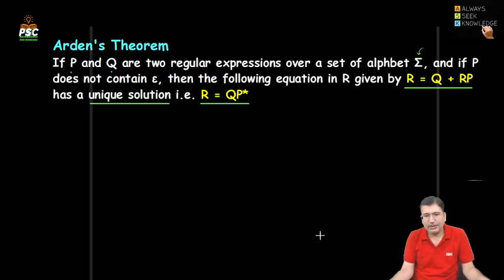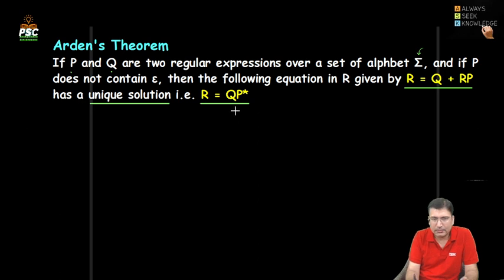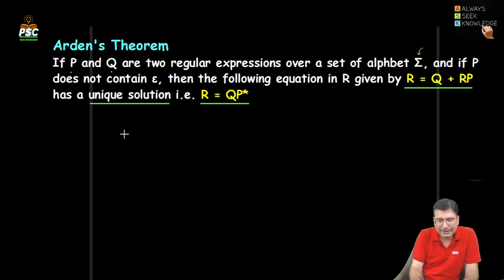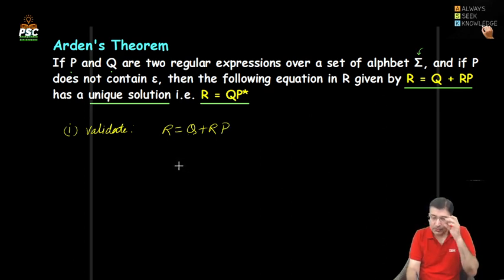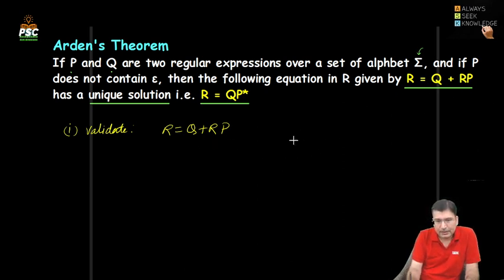Now first we need to look at how Arden's arrived at this and what the validity of it is. To validate this, our equation is R = Q + RP. Arden's theorem says there is only one unique solution for this equation. So let us replace R with the value Arden's gives us.